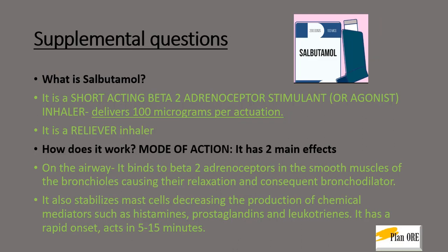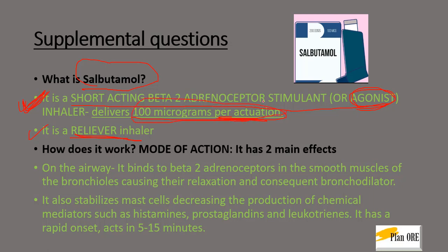Coming to medications — they may ask you what salbutamol is. You need to characterize it by saying it is a short-acting beta-2 agonist, or a beta-2 adrenergic receptor stimulant. You can also say it is a reliever inhaler, but it's better to stick to the first description to avoid drawing more questions. They may also ask: every puff, how much dose is actually given to the patient? It is 100 micrograms per actuation, or 100 micrograms per puff.